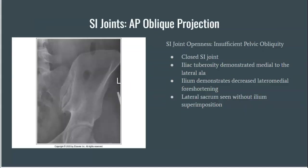To obtain an AP oblique projection of the SI joints, the patient should be rotated towards the unaffected side until the mid-coronal plane is at a 25 to 30 degree angle with the IR. However, if the patient is rotated less than that 25 to 30 degrees, the resulting AP SI joint projection will be demonstrated as closed.